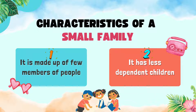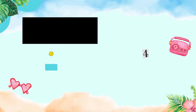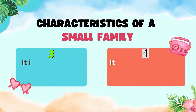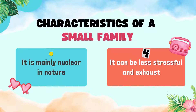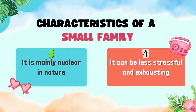Secondly, it has less dependent children. There are few children who depend on their parents in a small family. Then number three, it is mainly nuclear in nature — that means it is just father, mother, and few children.